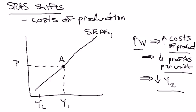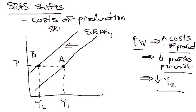How much less? Let's just call it Y2, which means the new price-GDP combination will be point B. That's not on the initial short-run aggregate supply curve, so there must be a new one — short-run aggregate supply curve 2. So the short-run aggregate supply curve shifts left.